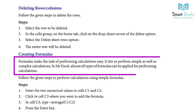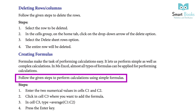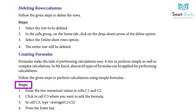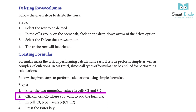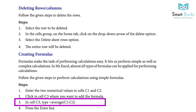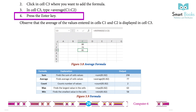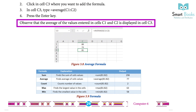Creating Formulas: formulas make the task of performing calculations easy. They let us perform simple as well as complex calculations. In MS Excel, almost all types of formulas can be applied for performing calculations. Follow the given steps: Step 1: enter two numerical values in cells C1 and C2. Step 2: click in cell C3 where you want to add the formula. Step 3: in cell C3, type =AVERAGE(C1:C2). Step 4: press the Enter key. Observe that the average of the values entered in C1 and C2 is displayed in cell C3.